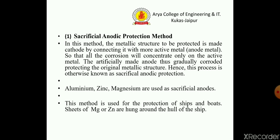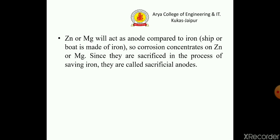This method is used for the protection of ships — sheets of magnesium and zinc are hung around the hull of the ship. Zinc and magnesium act as the anode compared to iron, so corrosion concentrates on zinc or magnesium, and they act as sacrificial anodes. This is known as the sacrificial anodic protection method.